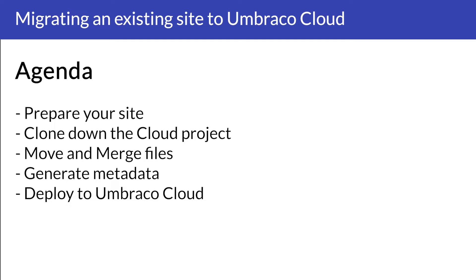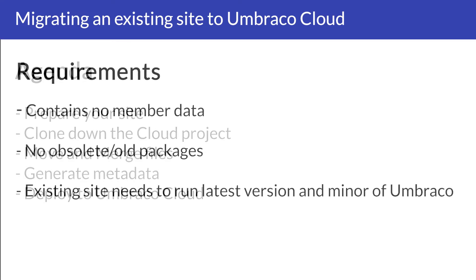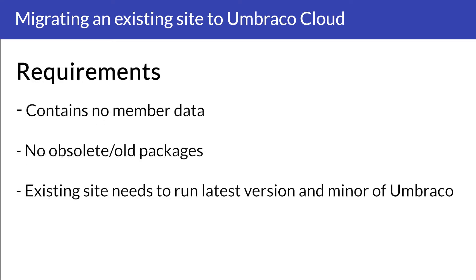Now let's have a look at the requirements for your site to be able to migrate it to Umbraco Cloud. First of all, it needs to contain no member data. If you do have member data, these will need to be imported manually after the migration. You also need to not have any obsolete or old packages, as they might not work on Umbraco Cloud as well. Lastly, your site needs to run the latest version of Umbraco. In this case, this is Umbraco 10 and the latest minor version, as on Umbraco Cloud all new sites are running the latest version of Umbraco.